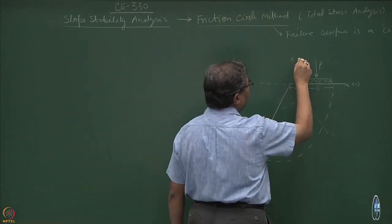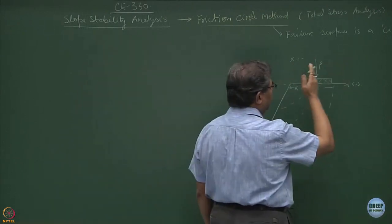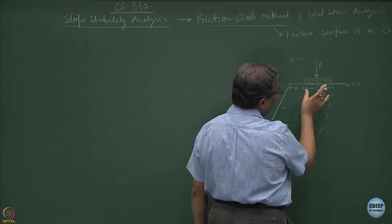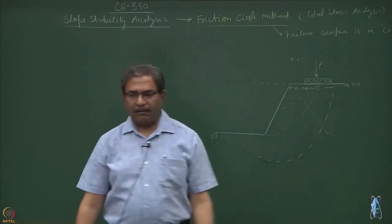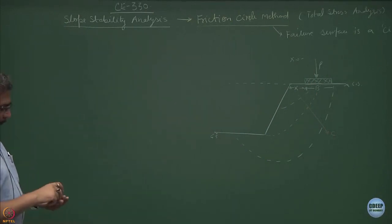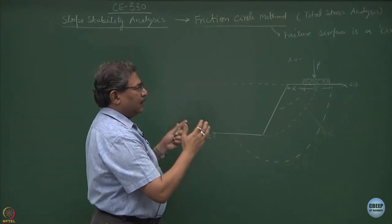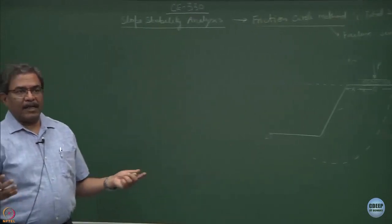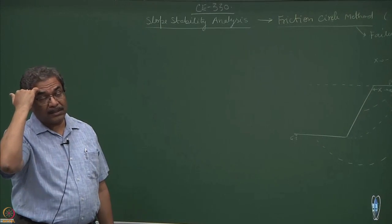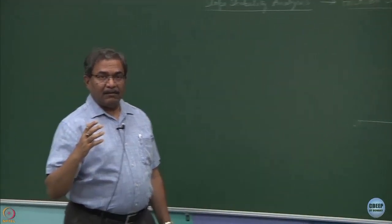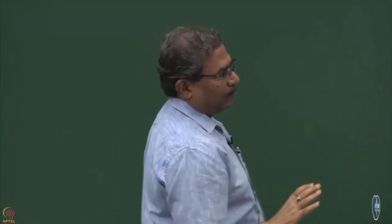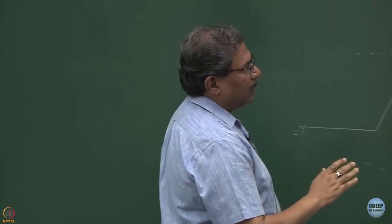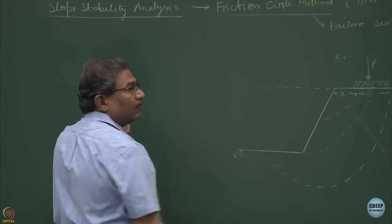So x becomes a very critical parameter. If x keeps increasing to 3, 5, 10, or 20 times the value of B, the foundation shifts away from the edge and the problem becomes a typical bearing capacity problem. I want to analyze the stability of the slope — foundation design and analysis you will cover in another course. This is an introductory course for soil mechanics or geotechnical engineering, where we discuss soil properties and how shear strength parameters are used for designing systems. My discussion is restricted to the stability of slopes.